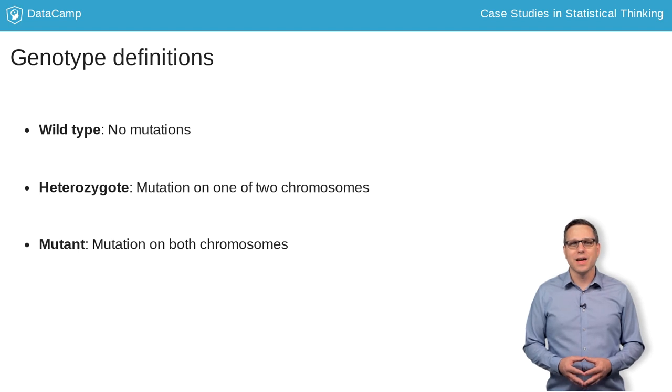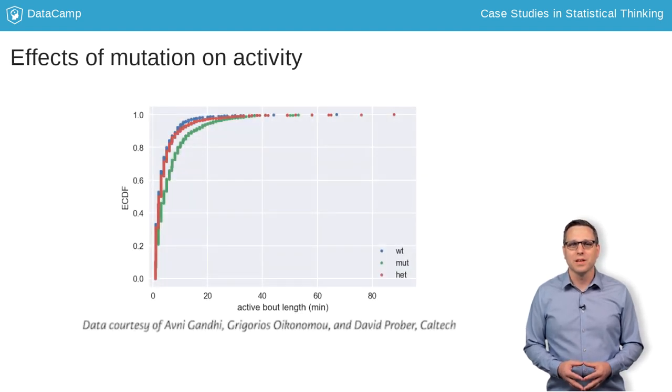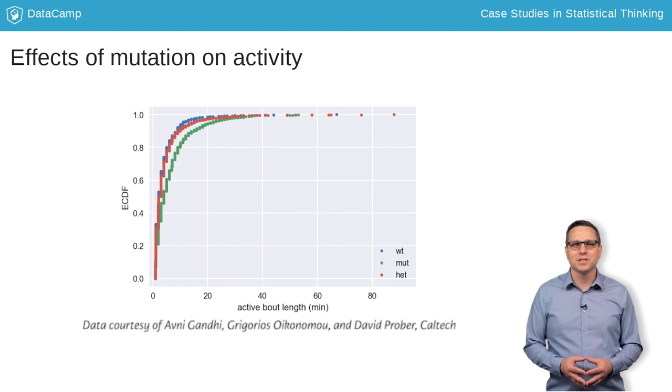When we do the same analysis of the heterozygote, we see that the effect is much smaller. Indeed, if we look at the ECDFs of active bout length, here with the x-axis range adjusted for ease of comparison, we see only a slight difference between the wild-type and heterozygotic fish.